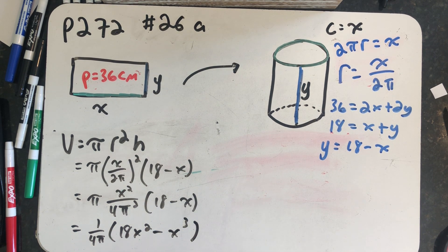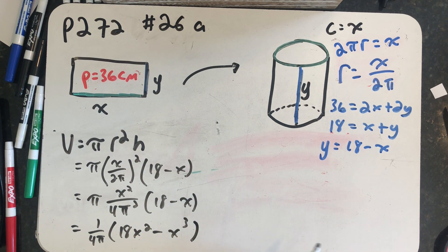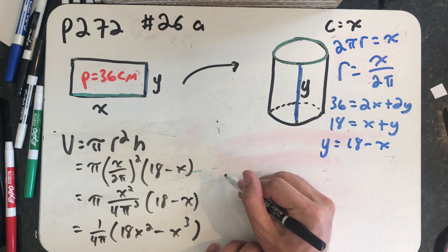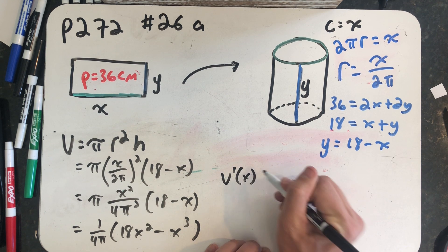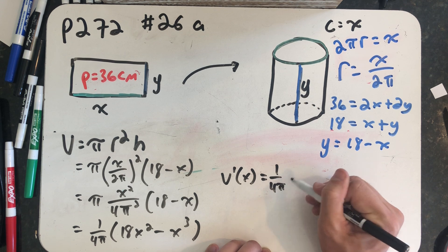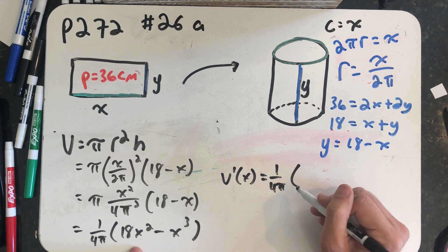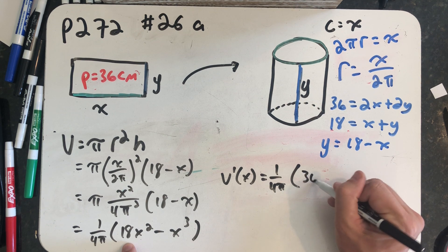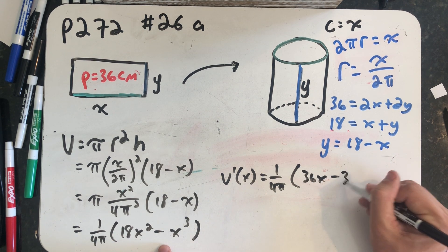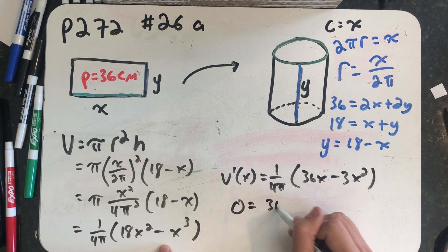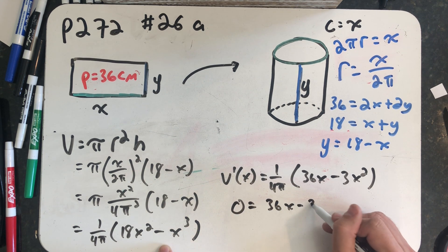We're asked to maximize volume. So let's take a derivative and find our critical values. Constant multiple rule says I could just leave the 1 over 4π out front and take the derivative of what's in here. That's going to be 36x minus 3x squared. My critical points will happen when that's equal to 0, because that derivative is defined everywhere.